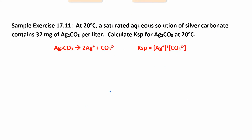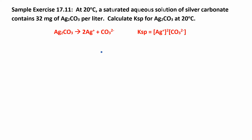Let's work a problem the long way first, and then I'll show you a shortcut in the next video. At 20°C, a saturated aqueous solution of silver carbonate contains 32 milligrams per liter — meaning you can dissolve 32 mg in one liter — and we want to find the Ksp. You write the reaction: silver carbonate solid dissociates into 2 silver ions and 1 carbonate ion. The Ksp expression is [Ag⁺]² × [CO₃²⁻], with the coefficient squared.